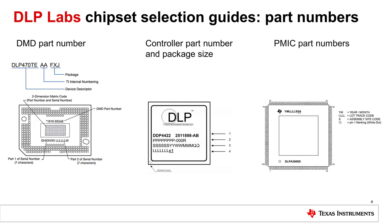The PMIC part number consists of DLP followed by A, which indicates that the part is a PMIC. The digits following the A identify the unique part number. For more information, see the device marking section of the data sheet of the product you are interested in.